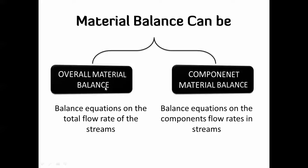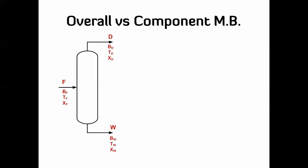When we do the material balance we can do two things. The first is the overall material balance, which is over the whole flow rate — you don't go into each species, you just do it on the total flow rate of each stream. The second is the component material balance, where you do calculations for each component in the system. For the distillation column example with feed composition B_F, T_F, and X_F, the overall material balance simply says F equals D plus W.